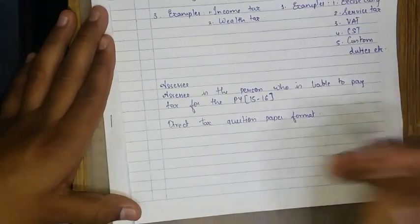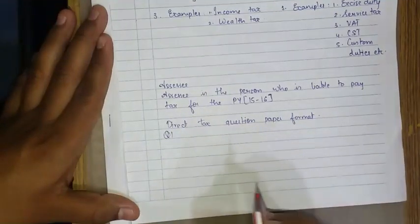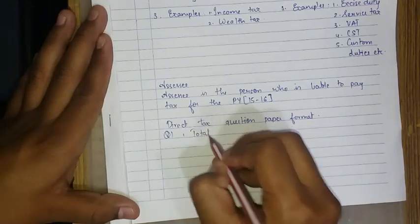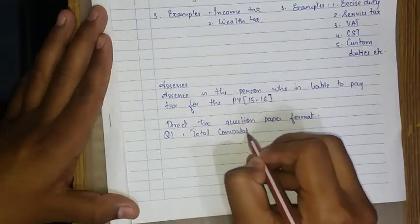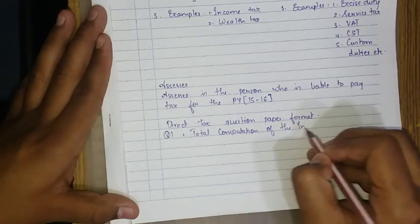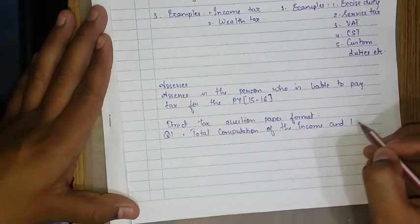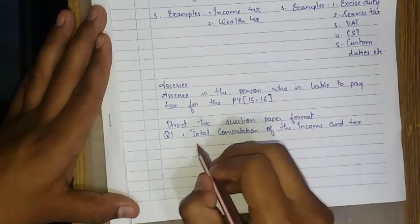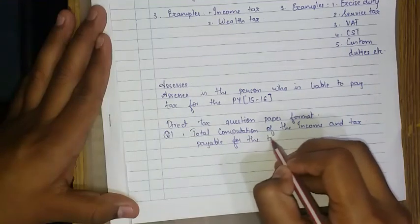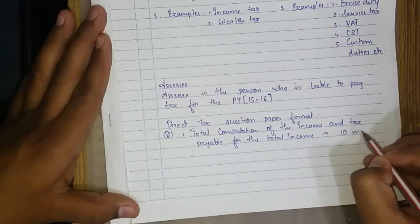Please pardon me for my handwriting. Question number one, the very first question comes for 20 marks. There are three questions in it. The first question will be the total computation of income and to find the tax liability and tax payable. The total income comes for 10 marks, the hardcore question.